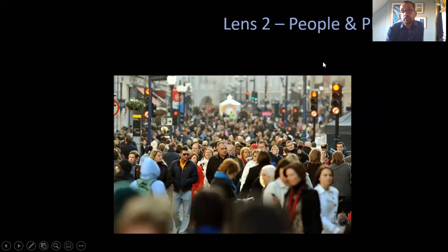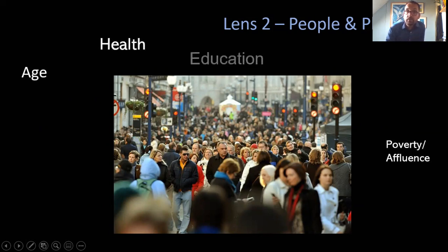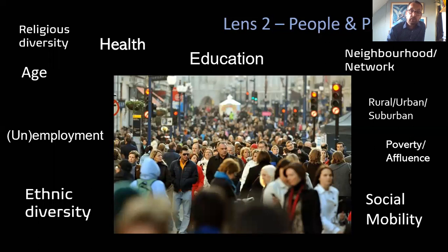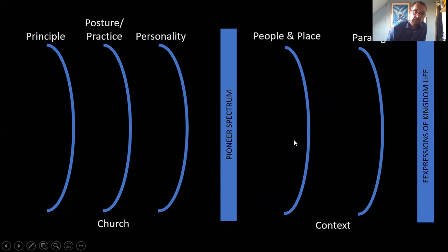The other lens is the lens of people in place — the classic task of listening to our context and listening to what makes a place a place. What kind of people live here — are they educated, do they exist in more of a neighborhood or a network, what level of employment is there, what level of poverty, ethnic diversity, religious diversity, age, social mobility? All of those things need listening to, just to begin to get a feel for the sort of place we're ministering in.